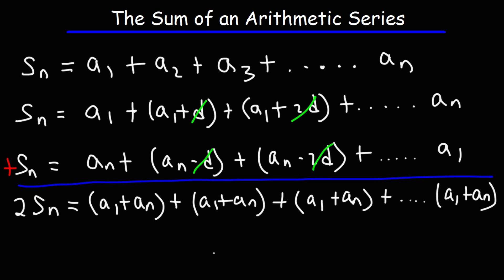Now we need to factor out the GCF on the right side. The GCF, the greatest common factor, is clearly a sub 1 plus a sub n. The question is, how many a sub 1 plus a sub n do we have? Would you say it's 3, 4, 5, 20, 36? The answer is we have n terms of these things. So if we factor out a sub 1 plus a sub n, we'll be left with n.